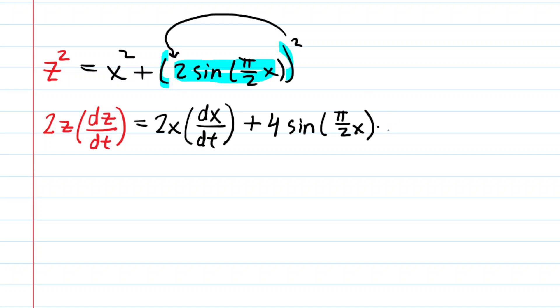That's going to become 4 sin(π/2 x) to the power of 1. But chain rule says don't forget to multiply by the derivative of the inner function. The derivative of sine is basically cosine. So we would have 2 cos(π/2 x), and then chain rule still requires us to multiply by the derivative of the π/2 x, so that would be times π/2. And then we would have to multiply by the derivative of the variable with respect to time, so dx/dt.